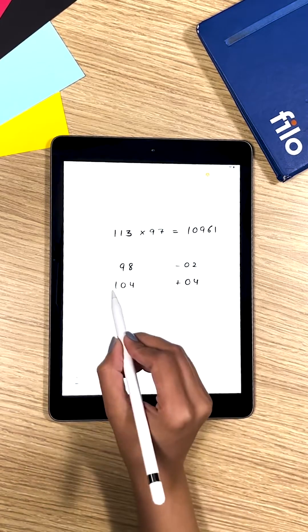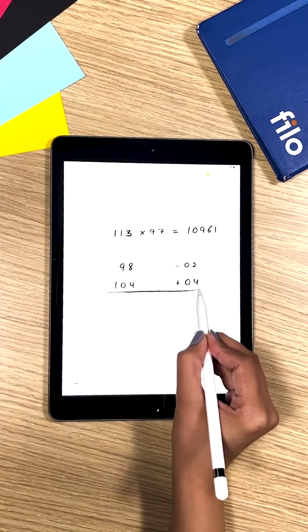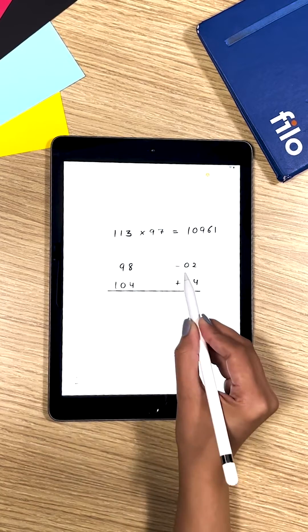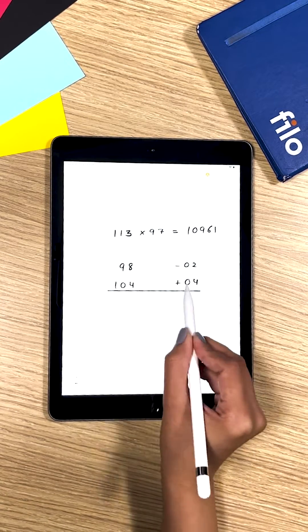So you write that down and to get the first part of the answer you add 4 to 98 or you subtract 2 from 104.